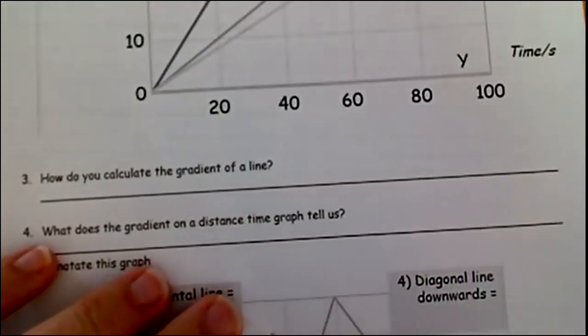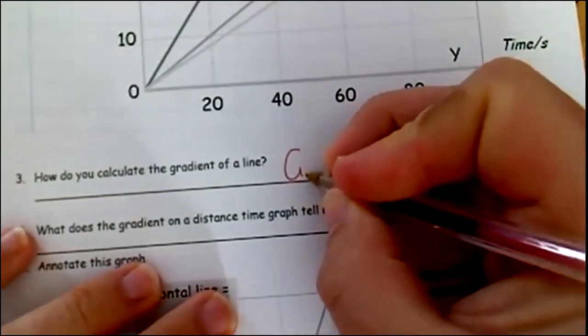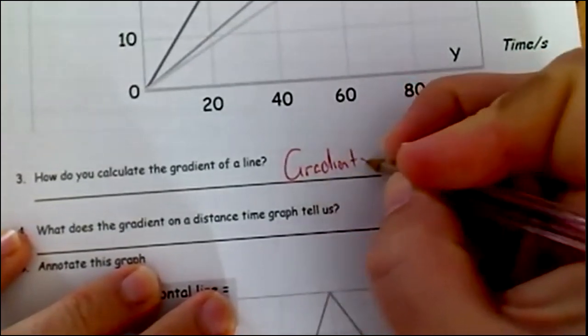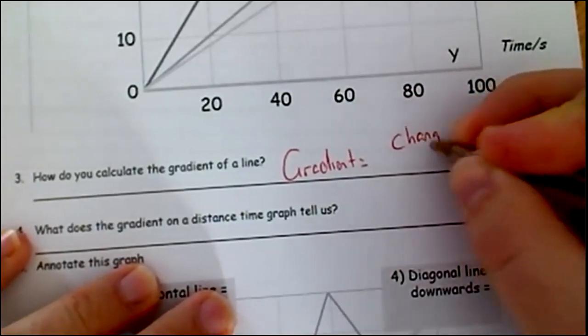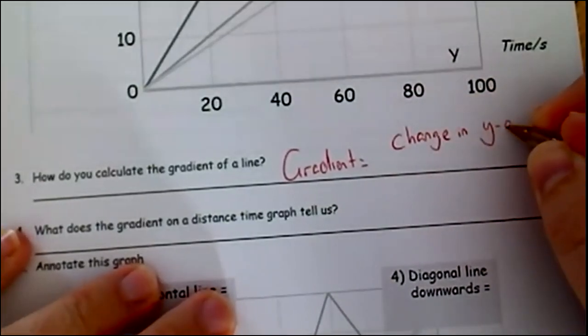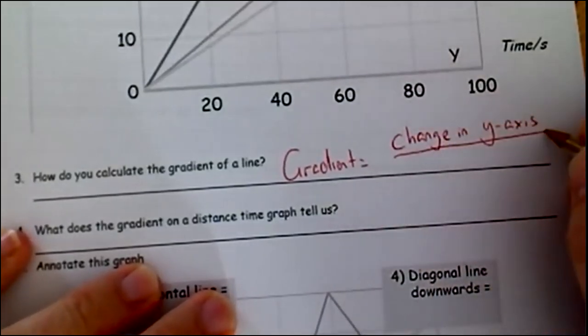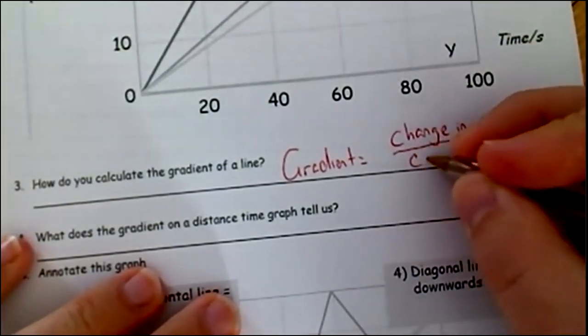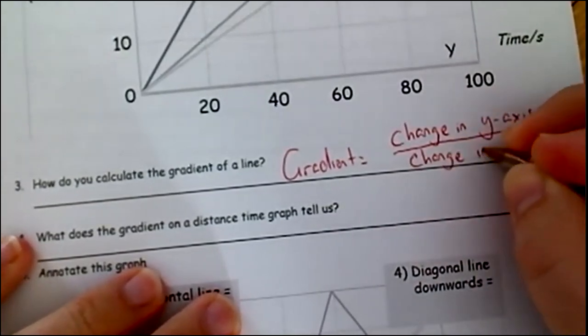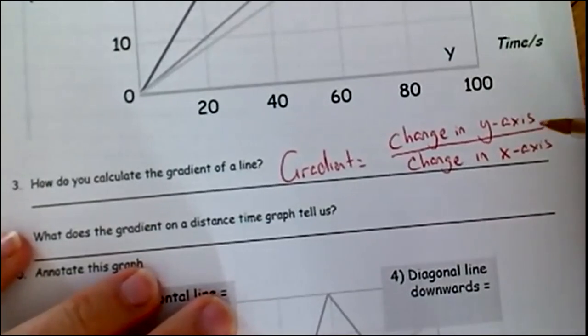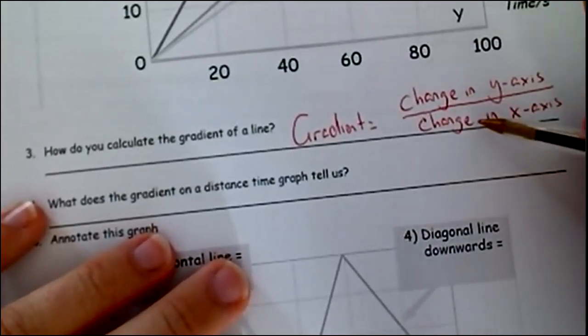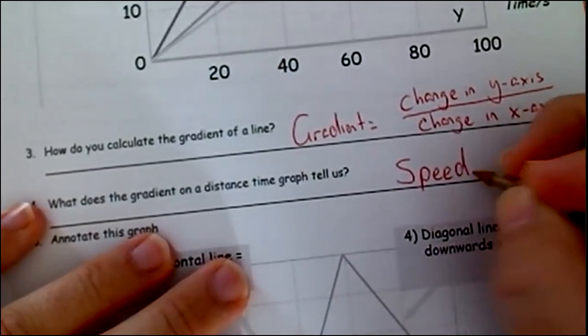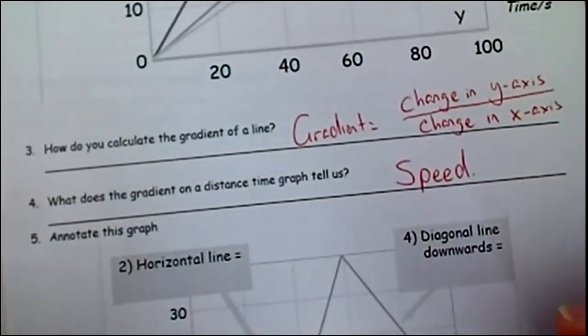Now this is the important bit. It says, how do you calculate the gradient of a line? The gradient is always going to be equal to the change in the y-axis. In this video, it's distance, so change in distance, and the x-axis, so you divide it by the change in the x-axis. So all you're doing is you're going to divide the distance by the time. Therefore, gradient, this is over time, that's the speed. If you calculate the gradient of a line, that will give you the speed, and that is really, really important.